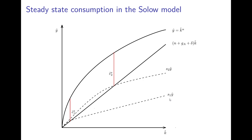Output per unit of effective labor always grows if we increase the saving rate, but this does not hold true for consumption. With an even higher saving rate S3, we see that consumption compared to consumption with saving rate S2 is already smaller. So consumption first increases with the saving rate and then decreases with the saving rate.